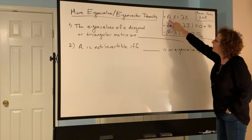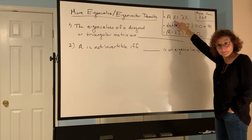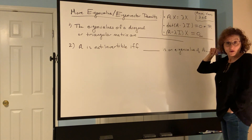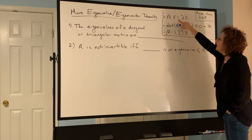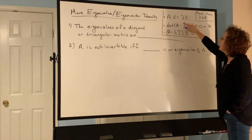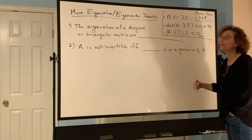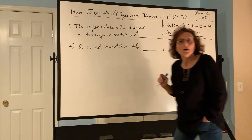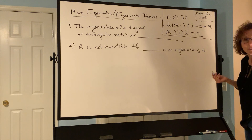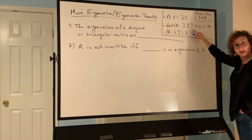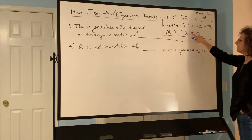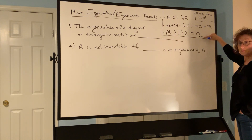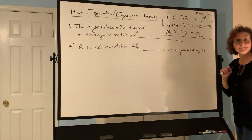The action of the matrix transforms this vector into some other vector in Rn. For what vectors is the action of that matrix transformation the same as just multiplying that vector by a scalar? Those special vectors and special scalars are our eigenvalue-eigenvector pairs. We find our eigenvalues through the characteristic equation and our eigenvectors through the null space equation. Here this zero is an n by 1 column vector and this zero is the real number.